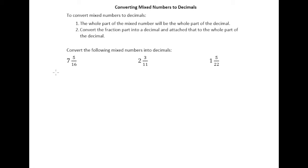So first let's look at 7 and 5 sixteenths. Really the steps are easy here. First of all, we understand that the whole part of the mixed number should become the whole part of the decimal, right? So we're going to have 7 point something. And then after that, just go ahead and convert 5 sixteenths into a decimal number, and then we'll put that to the right of the decimal.